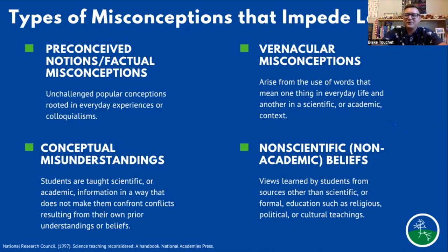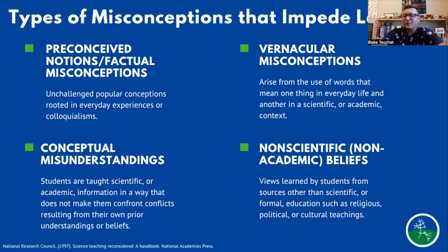So here's a recap: we can have lots of different types of misconceptions that can pop up in different ways. The two categories at the top — preconceived notions and vernacular misconceptions — are usually a little easier to resolve with students. The two categories at the bottom — conceptual misunderstandings and non-scientific beliefs — can be a little trickier to resolve.